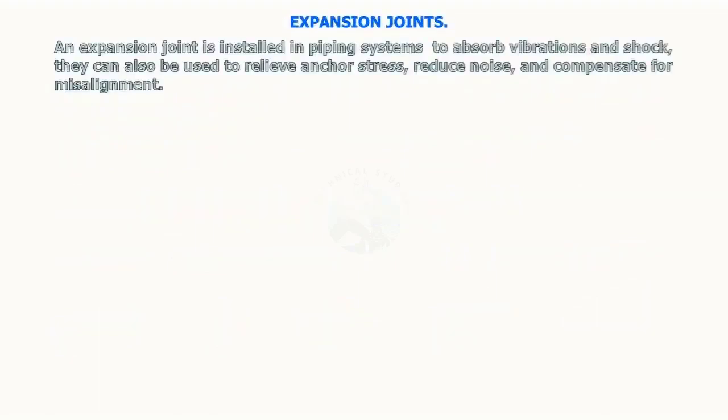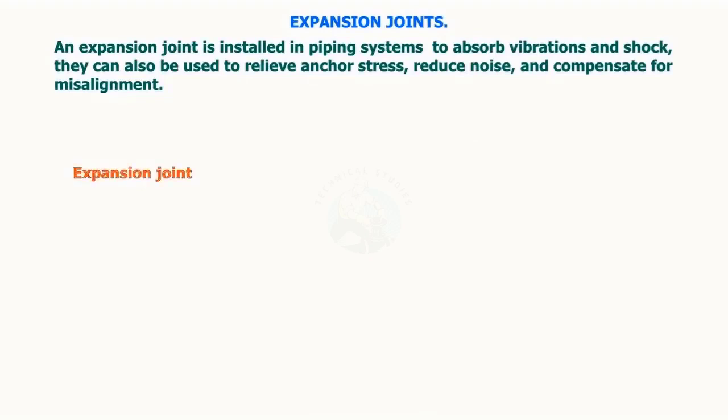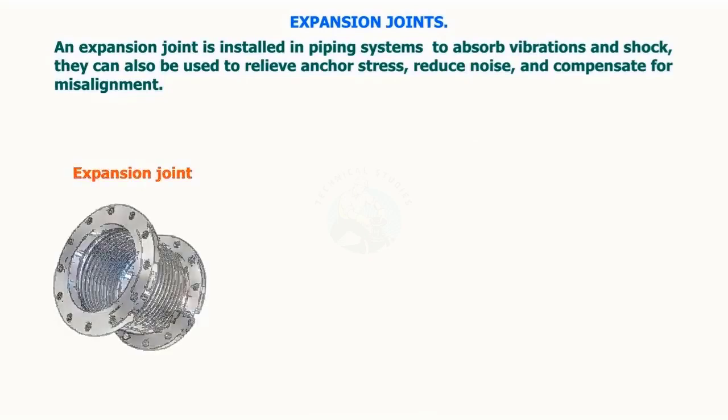An expansion joint is installed in piping systems to absorb vibrations and shock. They can also be used to relieve anchor stress, reduce noise, and compensate for misalignment.